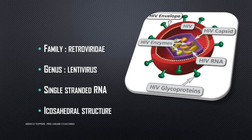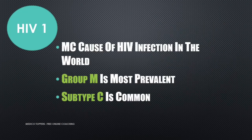The family of HIV virus is Retroviridae and the genus is Lentivirus. This is a single-stranded RNA virus — a frequently asked MCQ point. The structure is icosahedral. There are many types: HIV-1 and HIV-2. The most common cause of HIV infection worldwide is HIV-1, and within HIV-1, Group M is most prevalent. Within Group M, subtype C is most common. Remember: MC stands for Group M subtype C — the most common.